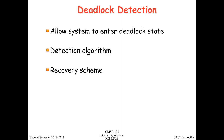The next approach is allowing the deadlock to happen: when a process requests a resource, you grant it immediately. Then, as the system progresses — perhaps on a timer — it runs an algorithm to detect the existence of deadlocks and then recover from them. So for every request, you grant it, and check later whether there is a deadlock in the system.